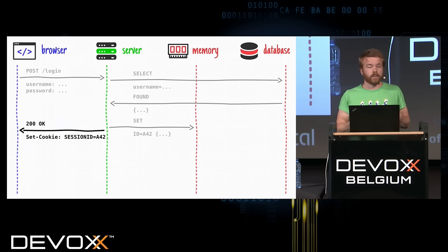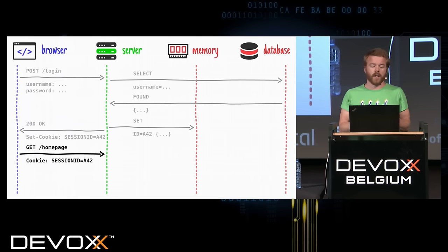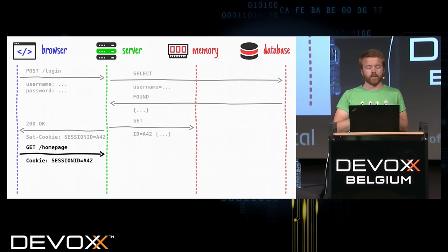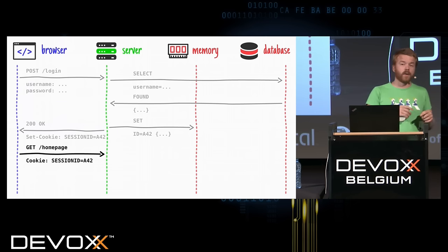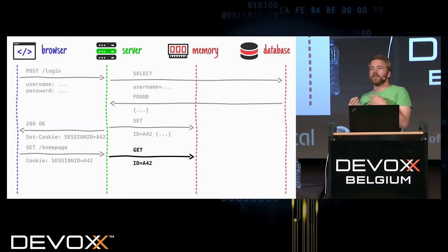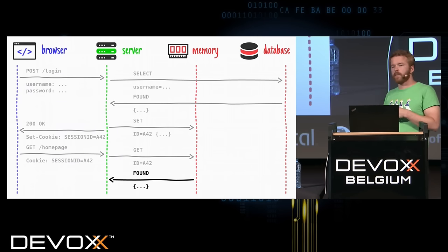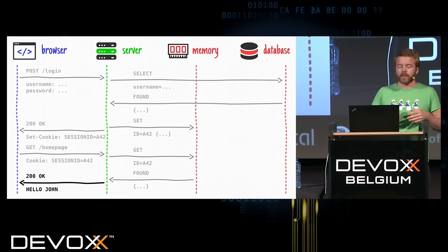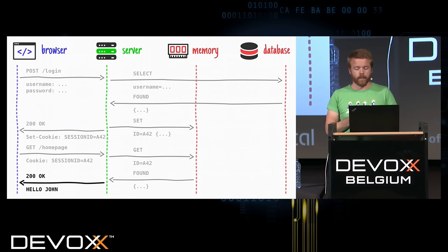I'm a browser, what do I do? I send the cookies. So once you navigate, you just send A42, and then the server again will need a third-party service — the same memory we used — to transform this obscure ID into information it really understands. By doing a round-trip to the memory, it can know that it was John, actually.